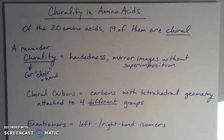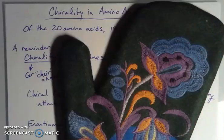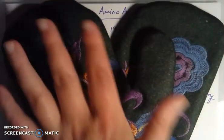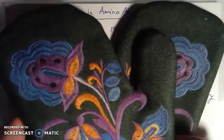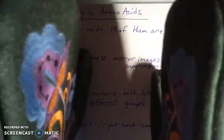What we mean by handedness is that we can have mirror images of things, and the glove is the usual example. So I have a glove here - here's my right-handed glove and here's my left-handed glove. If I have my right and left-handed glove and I put them side by side like this, we can see that they're mirror images of each other.